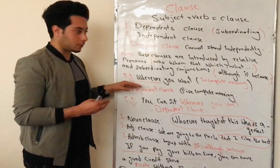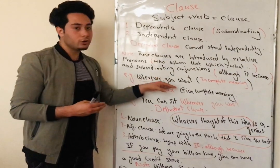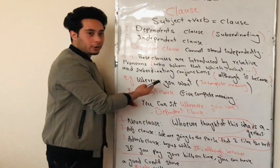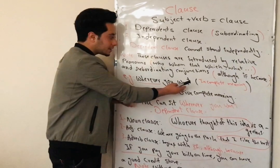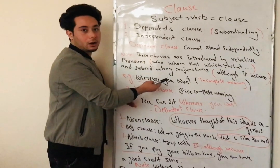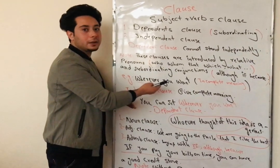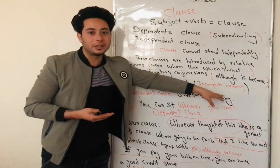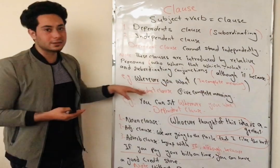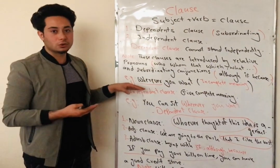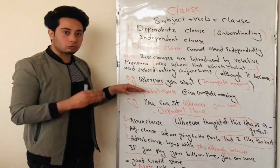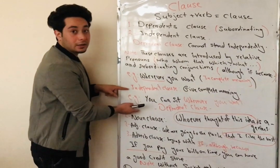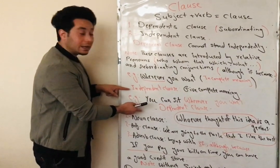Let's have an example: 'Wherever you want.' In this sentence, 'wherever' is a relative pronoun, and this is a dependent clause. It is a dependent clause because it has an incomplete meaning — the meaning is not complete. So in order to complete its meaning, it needs an independent clause.